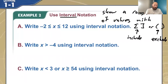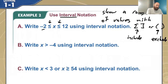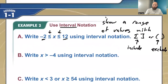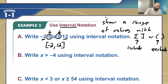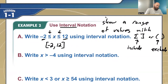So what that means is this. If I look at my inequality, negative 2 is less than or equal to x and x is less than or equal to 12. So we are including negative 2 and 12 as part of this interval, or part of this range of values. That means I'm actually going to be doing a bracket on negative 2, comma, 12 with another bracket. We are including both of these numbers as well as everything in between. Brackets are going to go with the less than or equal to or greater than or equal to symbols.